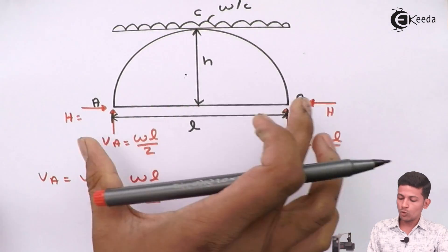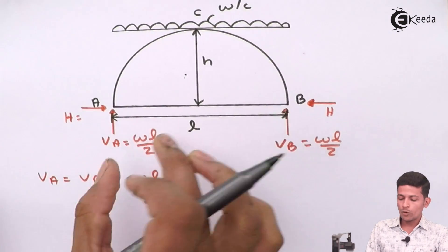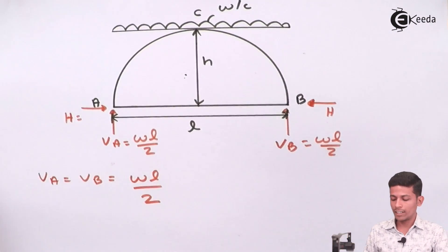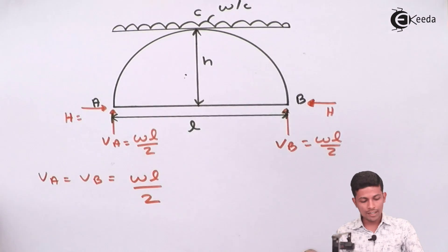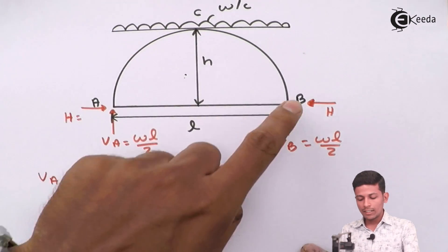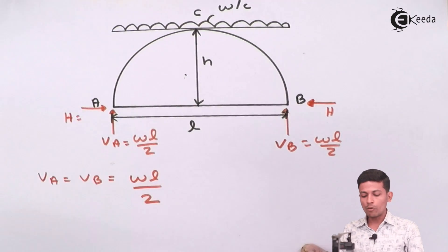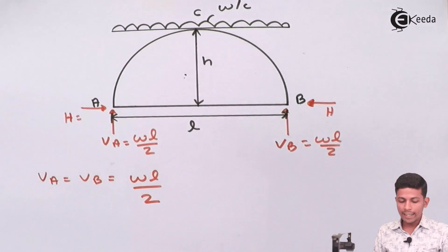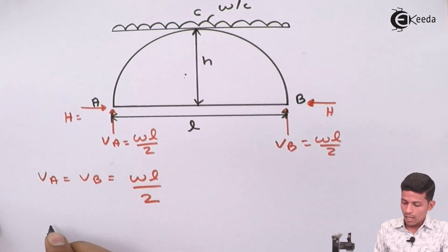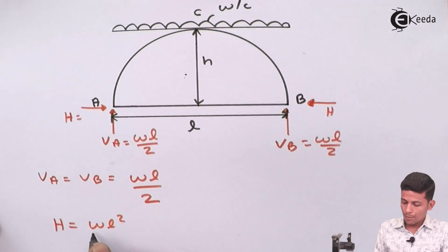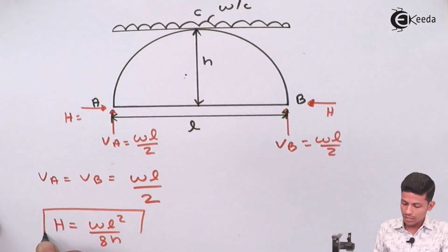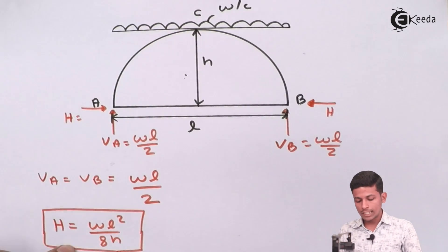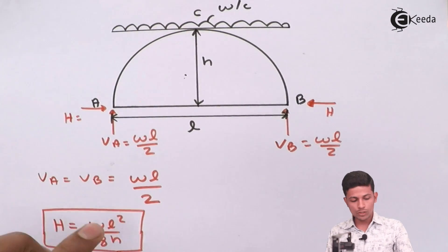Now we have to find H. There is a direct formula: H equals WL² upon 8h. But here we will derive how WL²/8h is obtained.